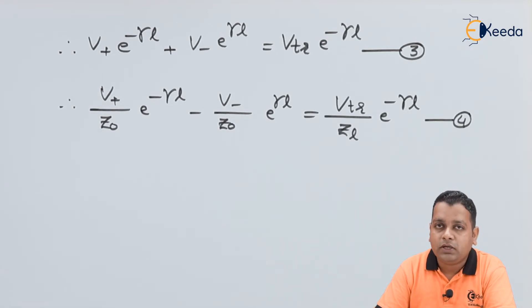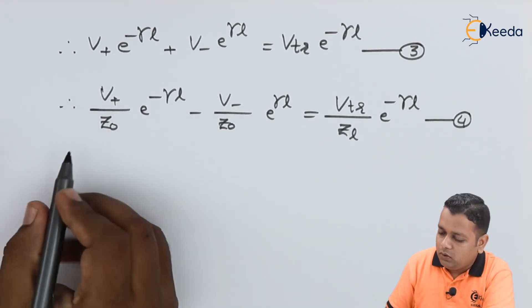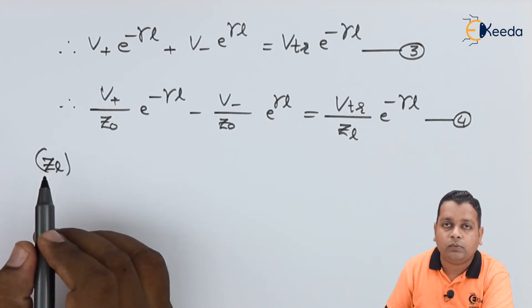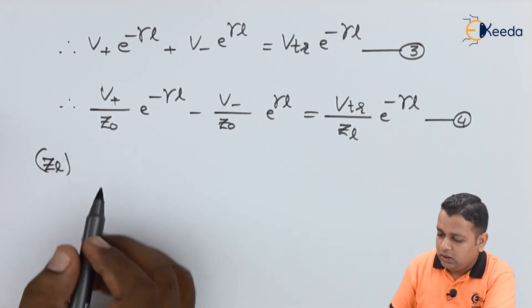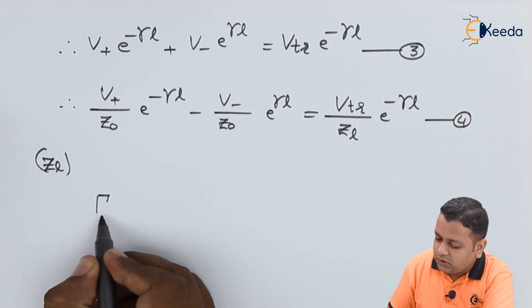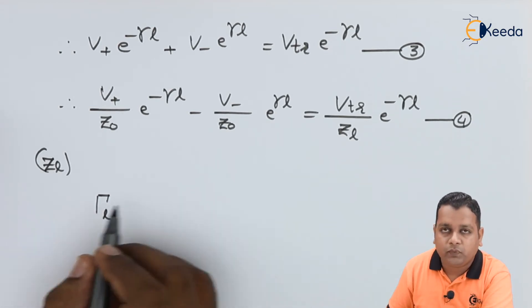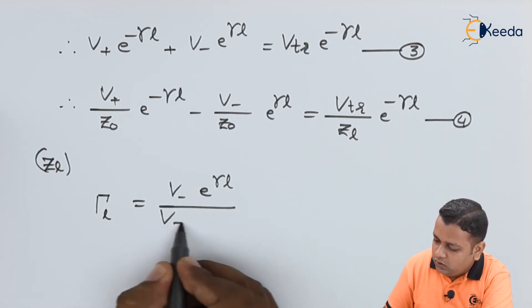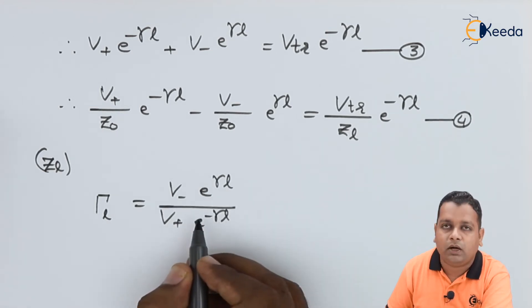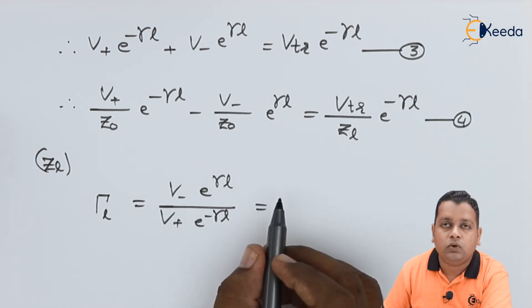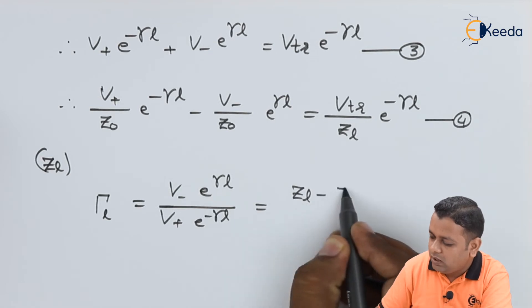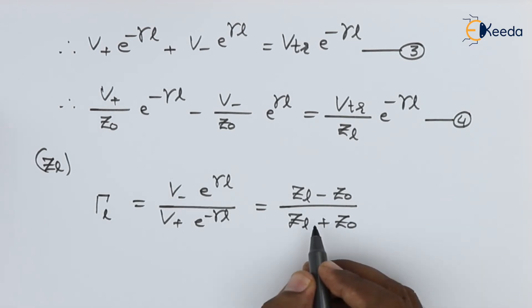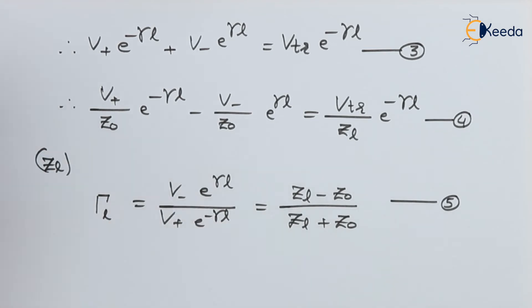Multiplying equation 4 by the load impedance Z_L and substituting the result into equation 3 gives us the reflection coefficient γ_L, which equals V⁻ · e^(γL) divided by V⁺ · e^(−γL). In terms of the load and characteristic impedances, this is (Z_L − Z₀) / (Z_L + Z₀). This is equation number 5.